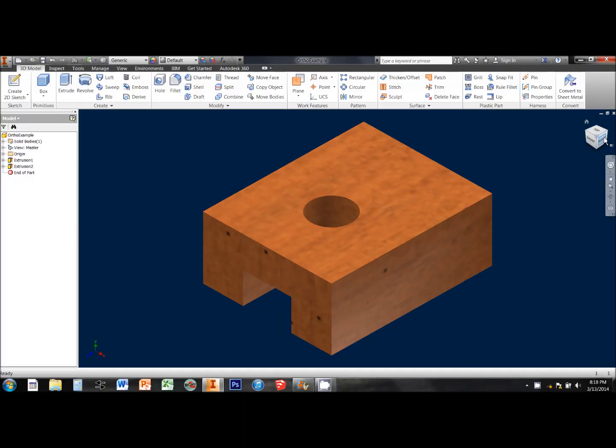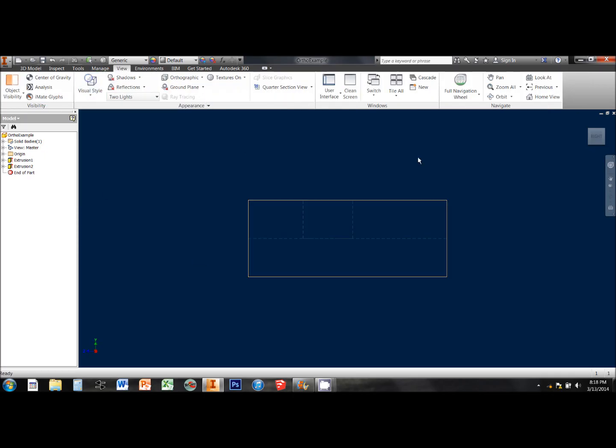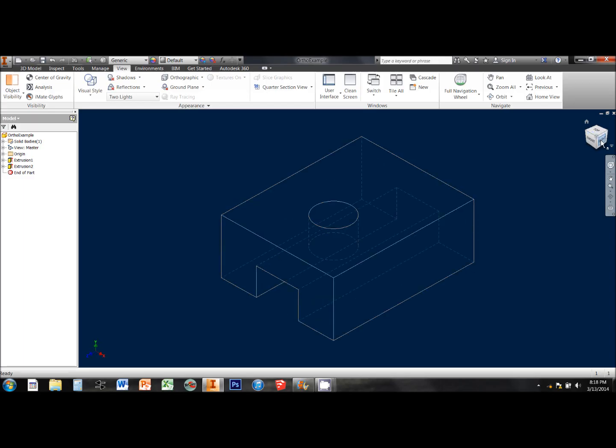From the right side, we can see very little information about the object. But if I have hidden lines, it's as if I have X-ray vision and I can see the edges of the notch and the hole that I couldn't see before. Hidden lines are useful, but we can't dimension to them.